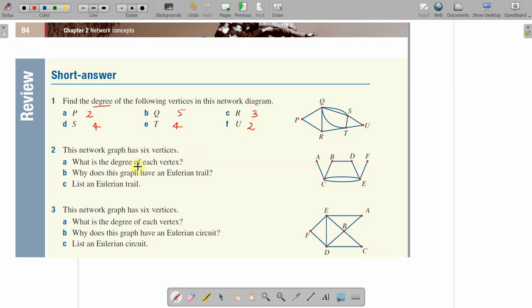For question two, this network diagram has six vertices all lettered A to F. What is the degree of each? A has degree 2, B has degree 4, C has a degree of one, two, three, four. D has a degree of 2. E has a degree of one, two, three, four - four. And F has only one.